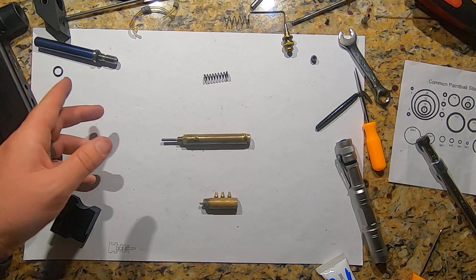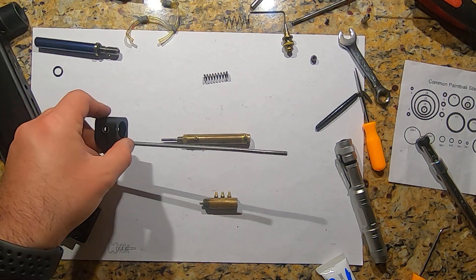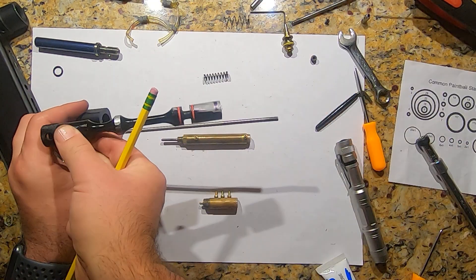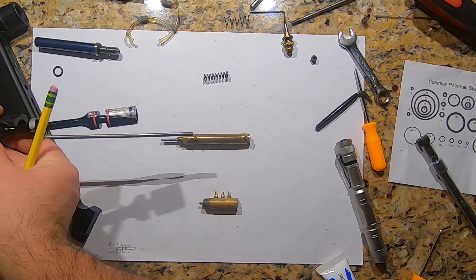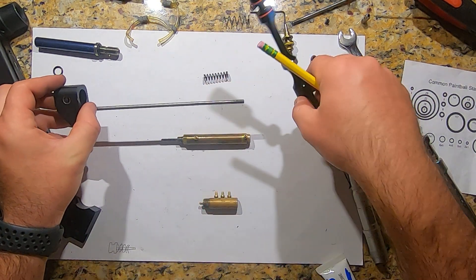Once you let go of the trigger, it pulls the back block forward, closing the bolt. This bolt's connected here, pushes it back, everything drops into place, sucks it back forward, closes the bolt, ready for the shot.